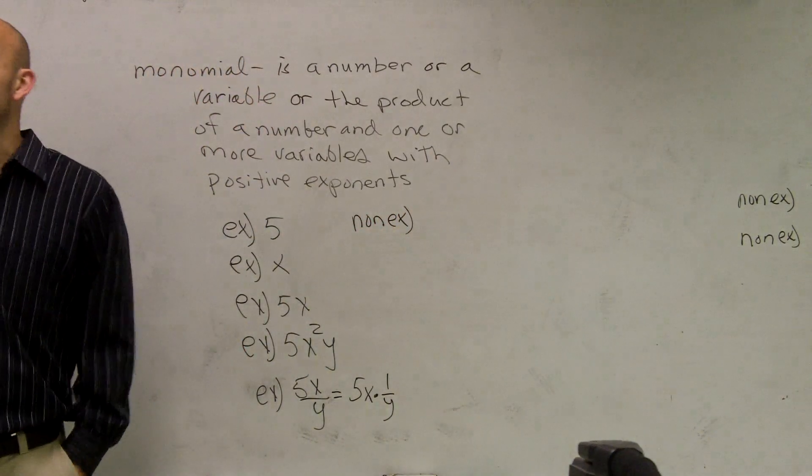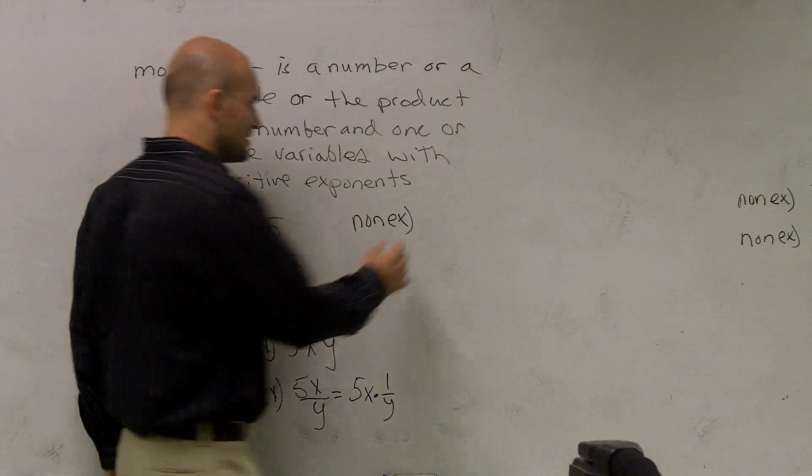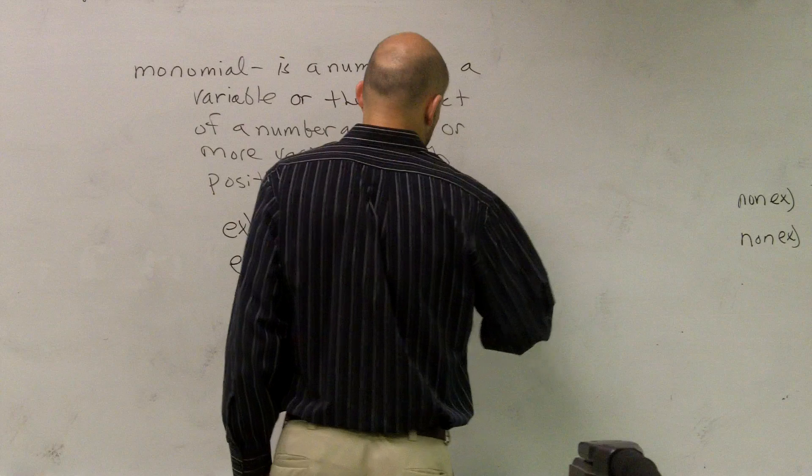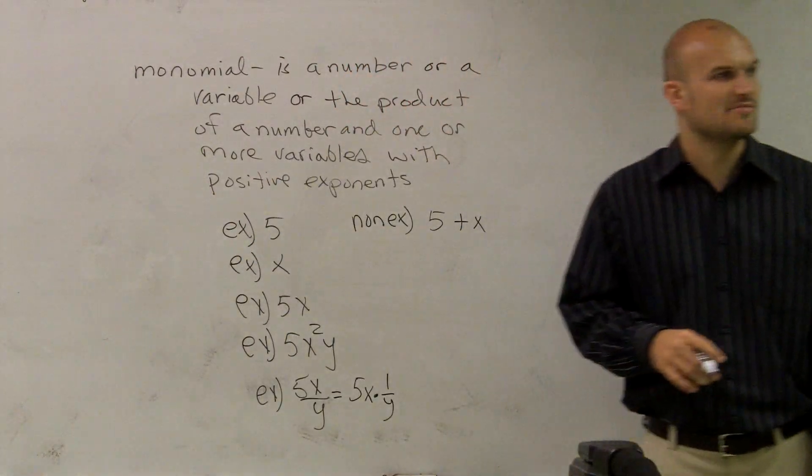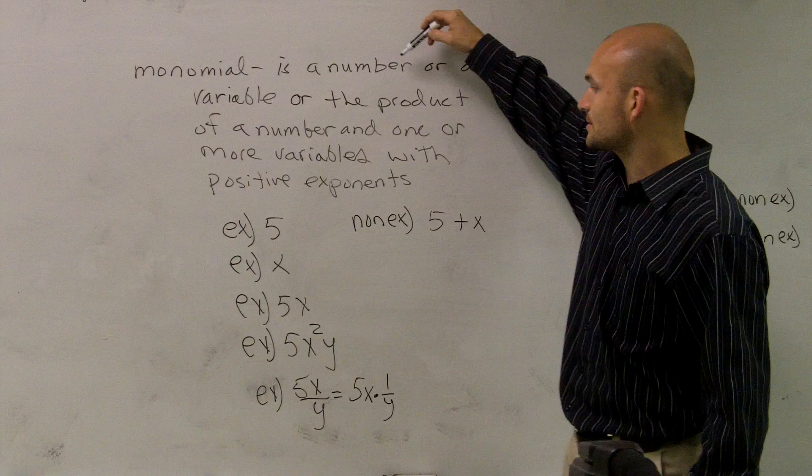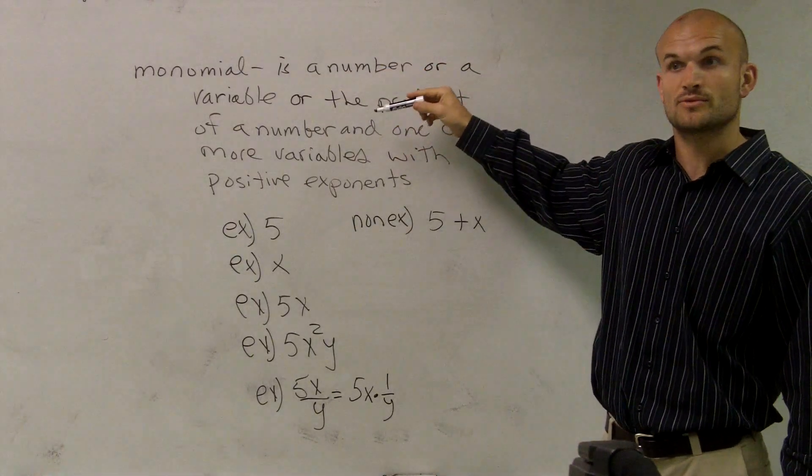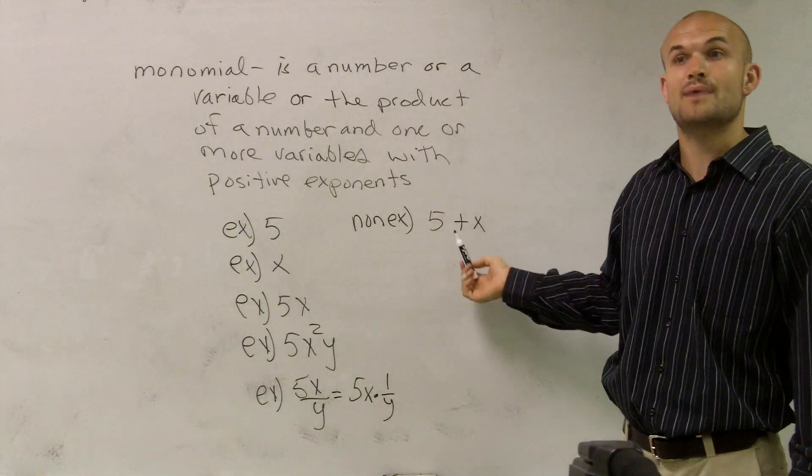And these are kind of the common ones a lot of students like to say. They understand 5 and they understand x. But then somehow they get into this thinking that 5 plus x is going to be a monomial. But it doesn't say anything about addition or subtraction in here, does it? It just says about multiplication. So this is not going to be a monomial.